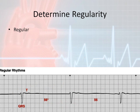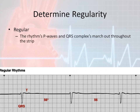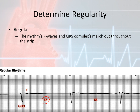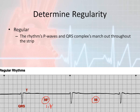This is just some examples of a regular rhythm. These rhythms are regular, meaning the P waves and QRS complexes march out throughout the strip. We're actually using the QRS complexes. As you can see, they counted it out for us — this is occurring at 56 little boxes between each QRS complex.